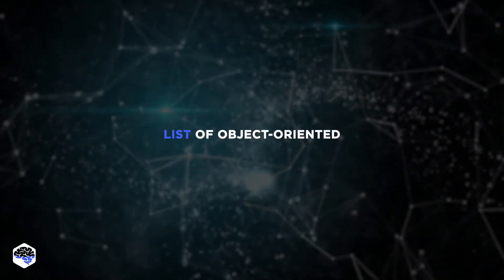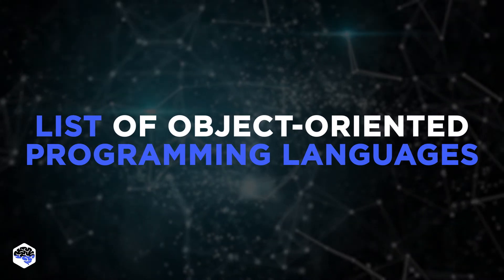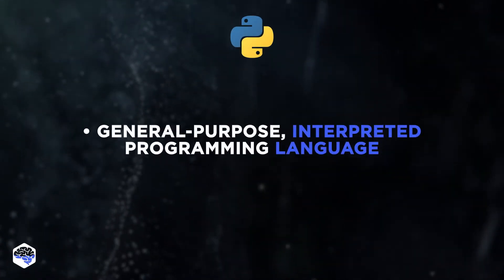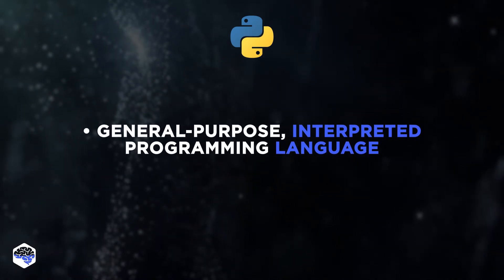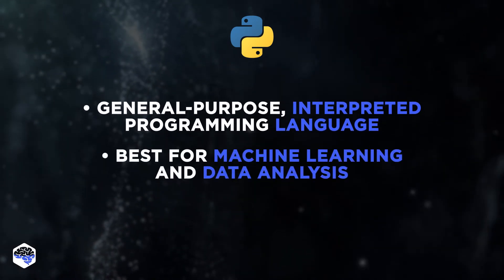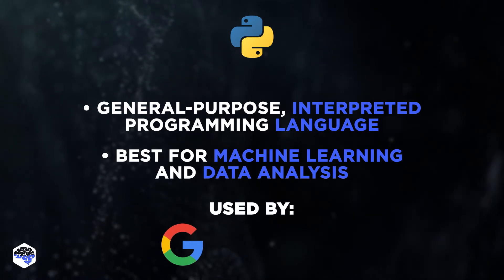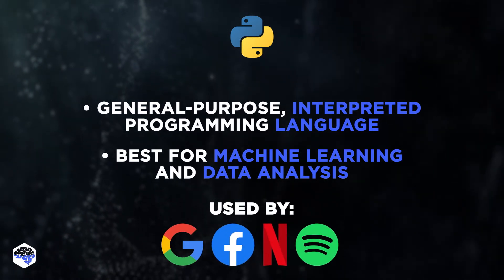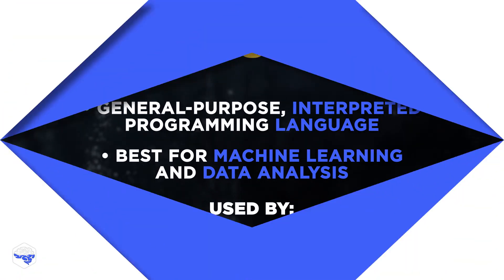Now let's take a look at the list of common object-oriented programming languages. The first one is Python — a general purpose, interpreted programming language. We consider this language the best choice for machine learning and data analysis. Google, Facebook, Netflix, and Shopify actively use Python for their projects.